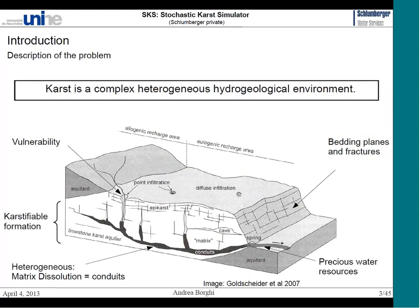The developed methodology aims to simulate karst aquifers. The only kind it will be suitable for are epigenetic karst — those that form from infiltration of rainfall water, which dissolves along bedding planes and fractures in the limestone matrix. By chemical enlargement, it forms characteristic features known as conduits or caves. This is the conceptual model on which my stochastic simulator is based.